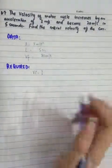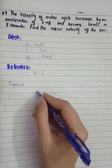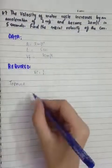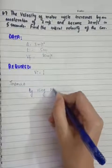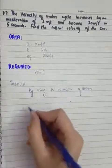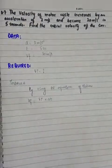We will use the first equation of motion. The formula is: VF equals VI plus a times t. We need a formula that contains VF, VI, and acceleration — that is our first equation of motion. VF is given, a is given, and t is given, so we can rearrange to find VI.